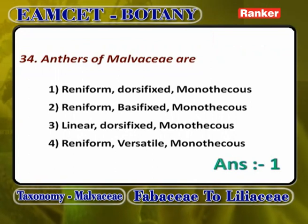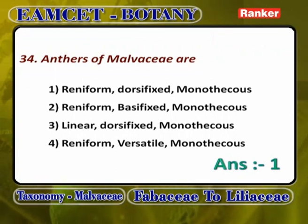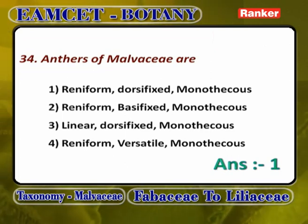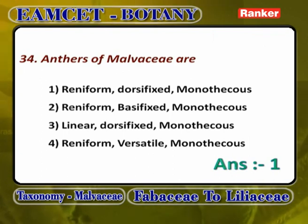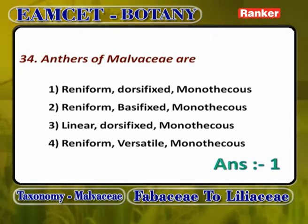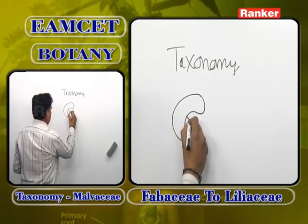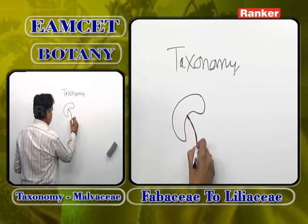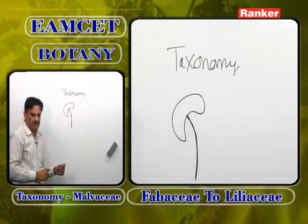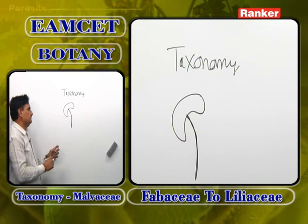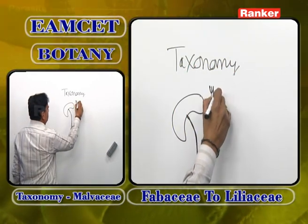Anthers of Malvaceae are Reniform, Dorsifixed, and Monothecous. They are not Basifixed, they are not linear, they are not Reniform versatile — they are Reniform, Dorsifixed, Monothecous. Reniform means they appear kidney-shaped. Dorsifixed means the filament is present almost on the mid-dorsal side of the anther.